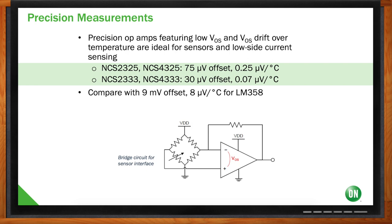Zero-drift devices do phenomenally well for measuring small currents, sensor currents, and low-side current sensing. For example, the NCS2333 — the dual of the NCS333 — has a 30 microvolt offset with a 0.07 microvolts per degree C drift. So not only do you keep that level of accuracy at initial start, but you also maintain it as the application operates over time or through variances in temperature.